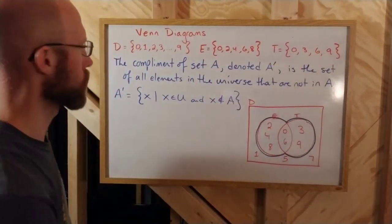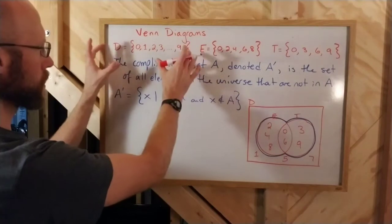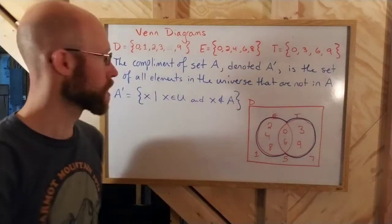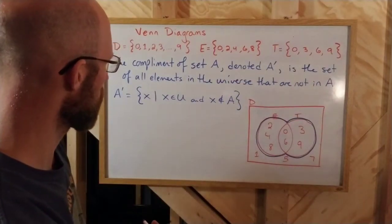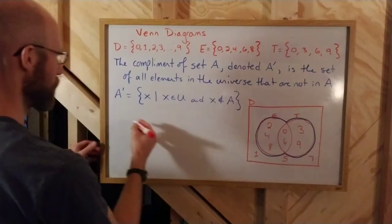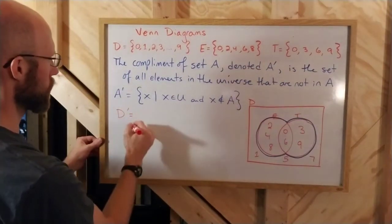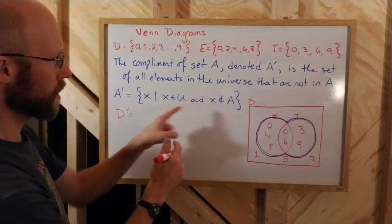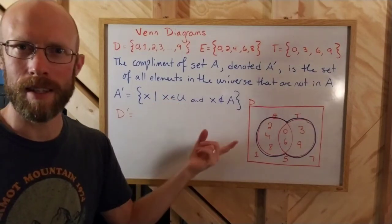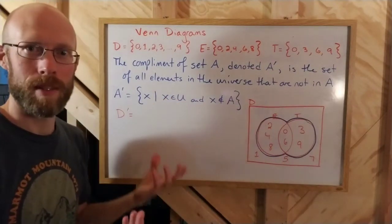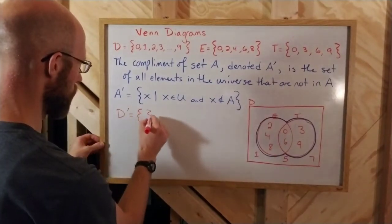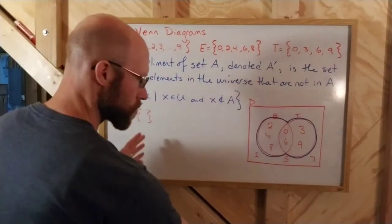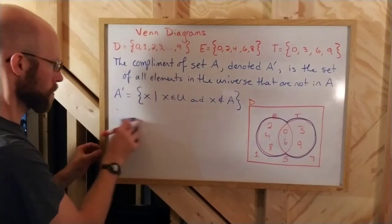E and T, so we can't look at the complement of D because D is the universe, right? I guess you could, technically, but it'd be empty, I guess. If we look at the complement of D, all the elements that are in D and not in D, in the universe but not in D, don't exist. So there'd have to be nothing there. So that would be the empty set. The complement of the universe is empty. Kind of interesting. Not what I wanted to really talk about, but it's there.